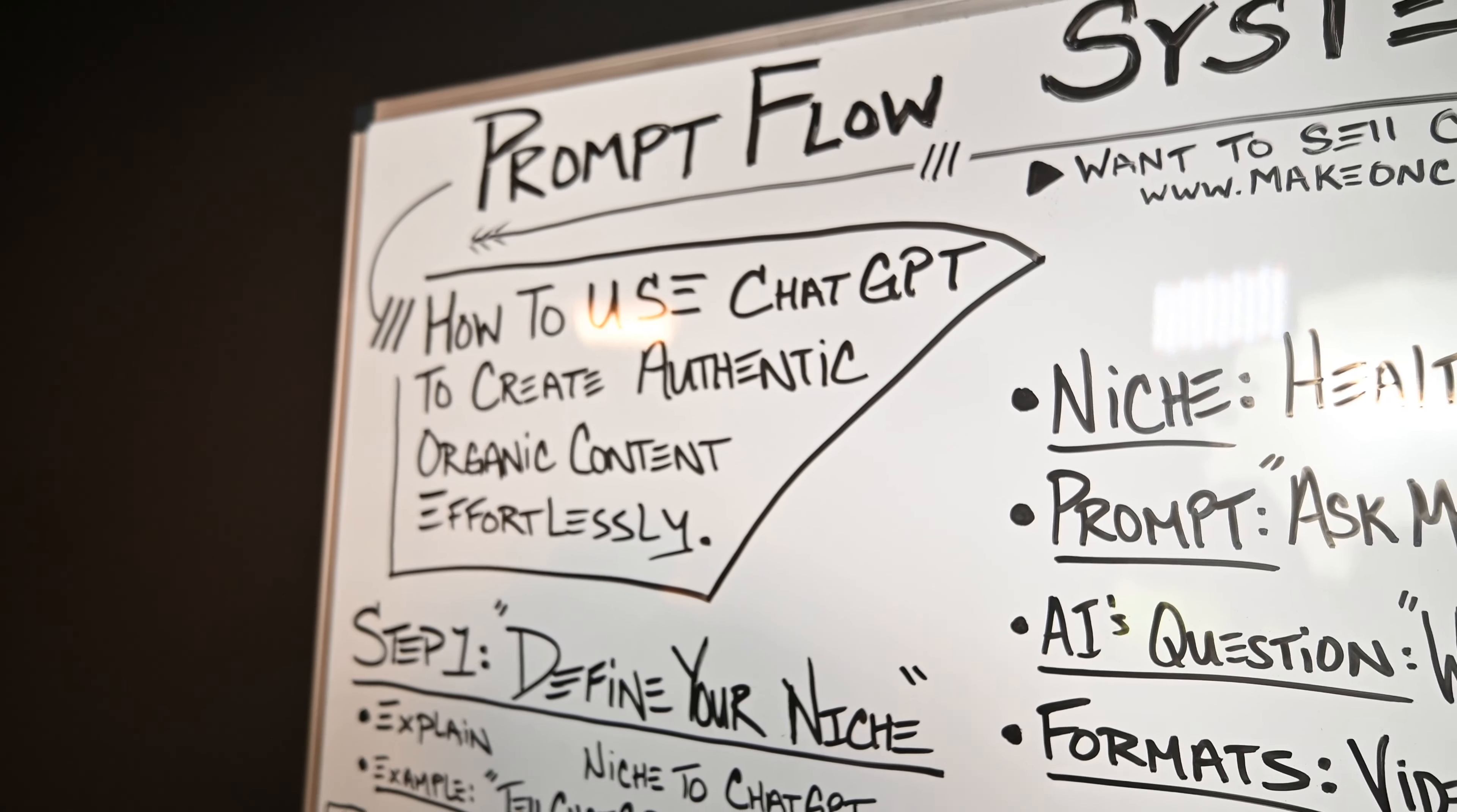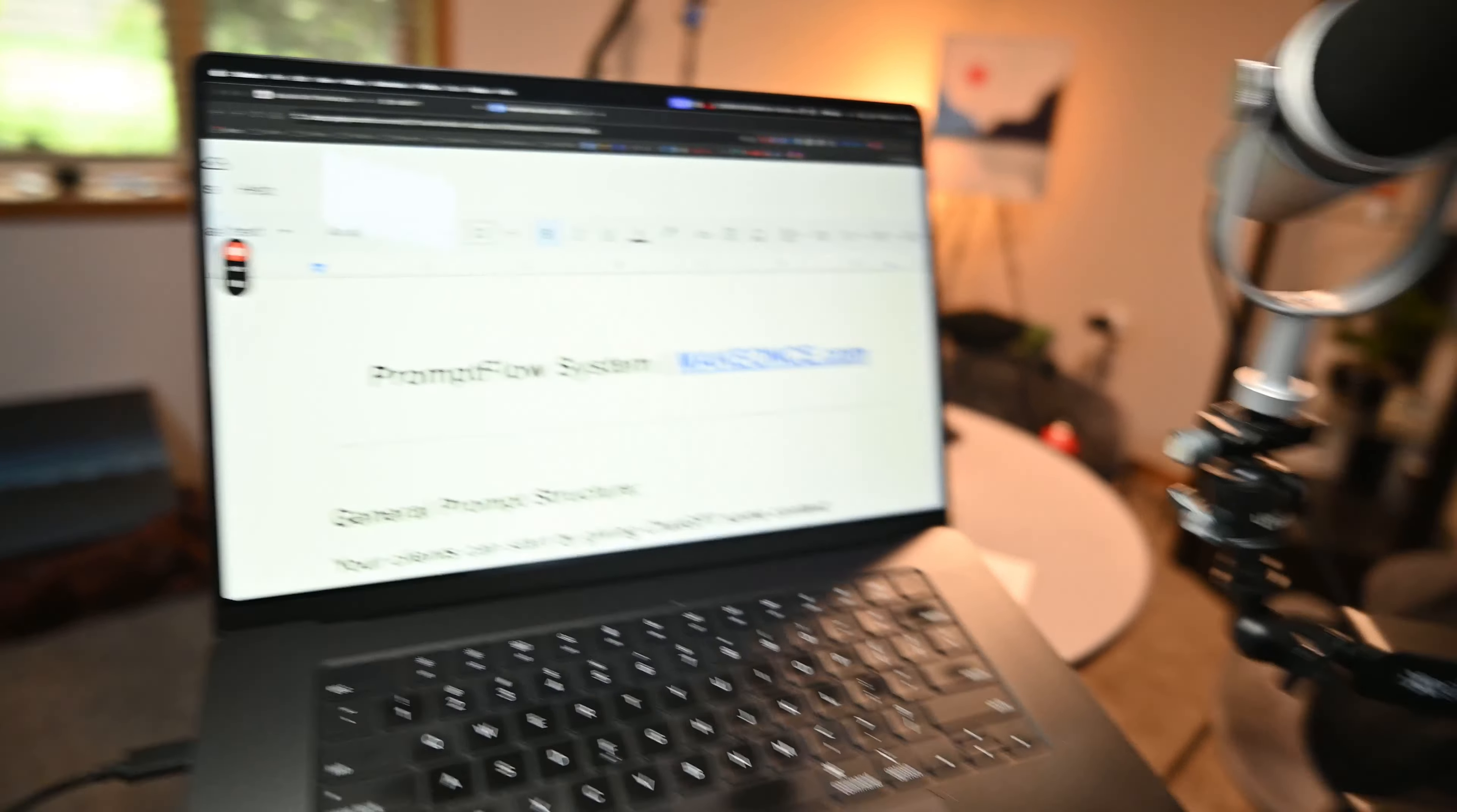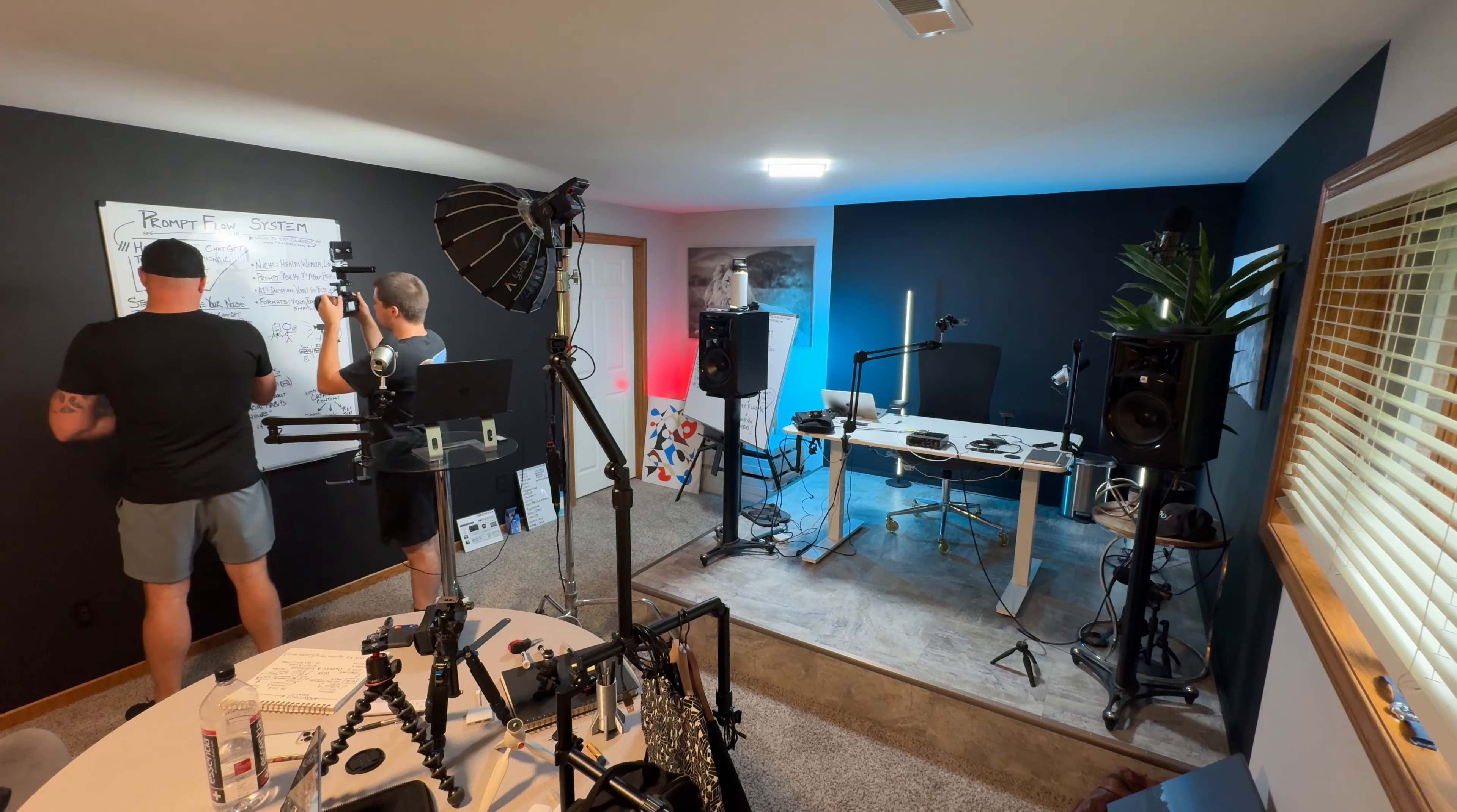This PromptFlow System is basically something where you can turn ChatGPT into somebody that can talk to you and help you create content, because people do so much better when they get questioned. I've got these prompts that I'm going to be giving you for health, wealth, and relationships, so that you can constantly create really good content. I've noticed that when somebody's talking to me and asking me questions, I can create much better content.